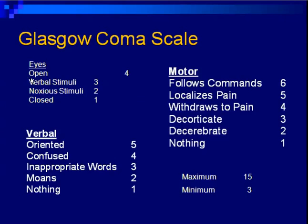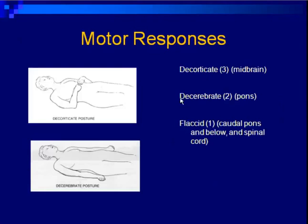A quick review of the Glasgow Coma Scale: normal patients open eyes to verbal comment, are fully oriented, and follow commands — a maximum score of 15. A comatose individual keeps eyes closed to verbal stimuli, makes no verbal response, and makes no movement — a minimum score of 3. The scale assesses increasing degree of response needed: verbal stimuli versus noxious, and degree of orientation, whether they follow commands, localize pain, or withdraw. Decorticate posture indicates midbrain binding; decerebrate indicates pons involvement; flaccid no motor movement is consistent with the lower pons and below, including the spinal cord.